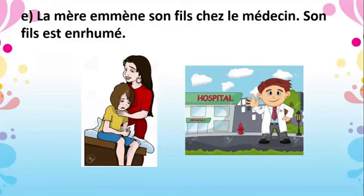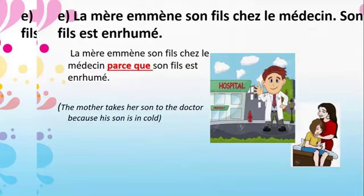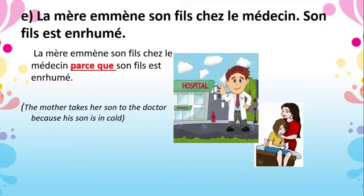The fifth one, E: 'La mère emmène son fils chez le médecin. Son fils est enrhumé.' The mother takes her son to the doctor because her son is coughing. You can combine these two sentences with the help of parce que: 'La mère emmène son fils chez le médecin parce que son fils est enrhumé' — the mother takes her son to the doctor because her son has a cold. Clear. This is how you have to combine these two sentences with the help of the expressions of the reason.